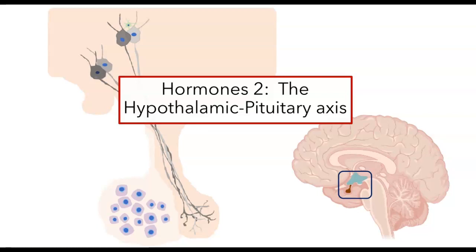In this video, I want to talk about the hypothalamic-pituitary axis. This system is really important in physiology. It links the brain and the endocrine systems together, and it allows an animal to coordinate an appropriate response to some change in its environment at a body-wide level.